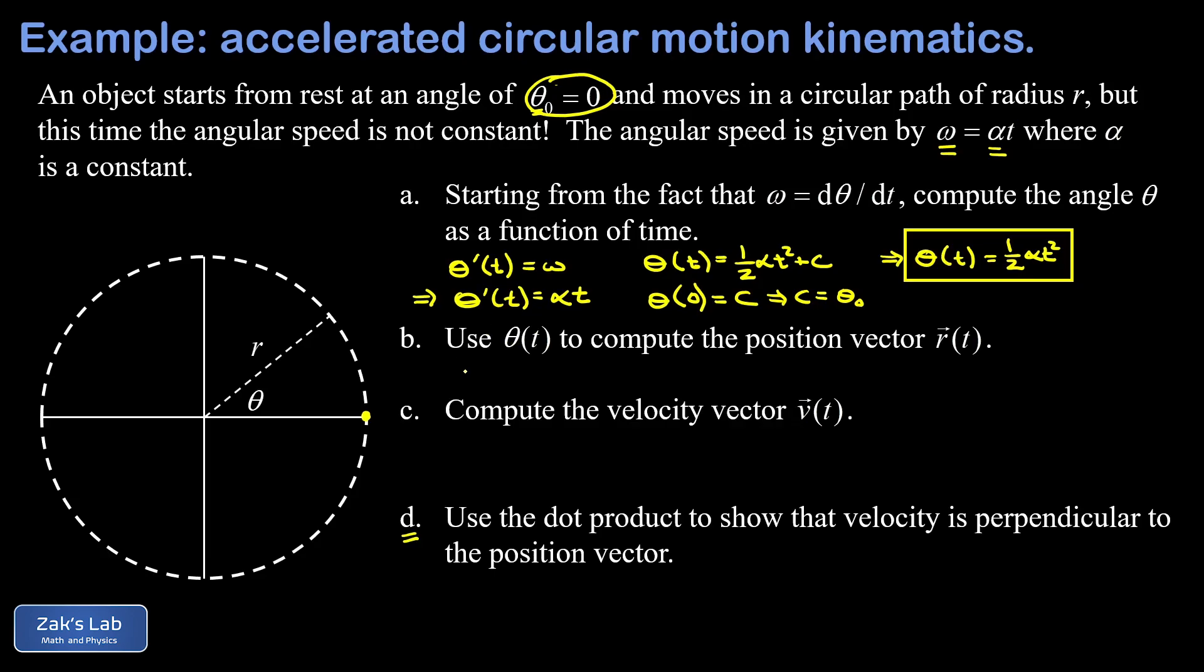I'll post a link to that video at the top of the screen. In that derivation, we found the position vector, velocity vector, and acceleration vector for uniform circular motion, when omega was constant. So if you know how to do that, then part b is not such a big deal here. r of t, the position vector—I'll just visualize that real quick in the picture.